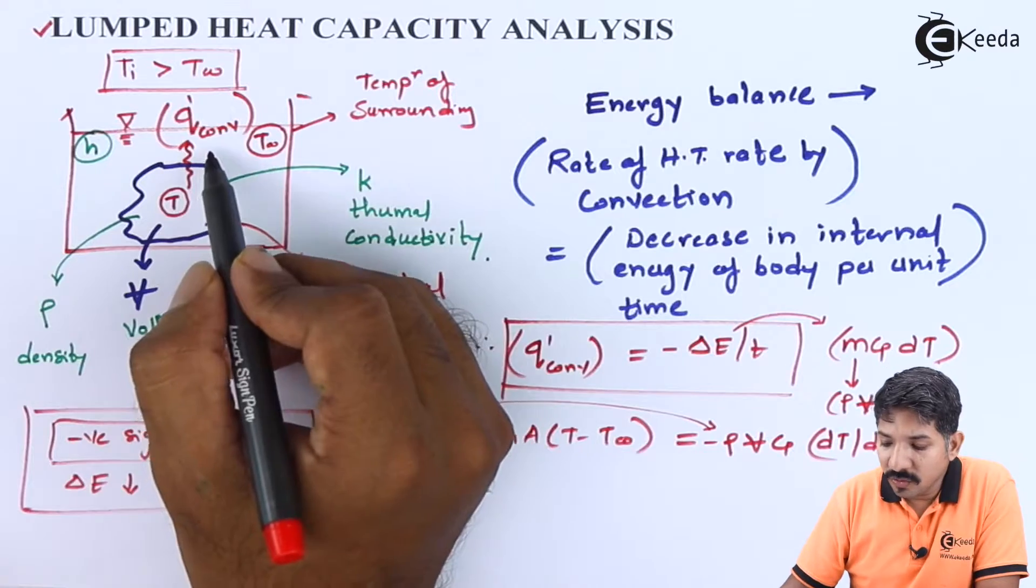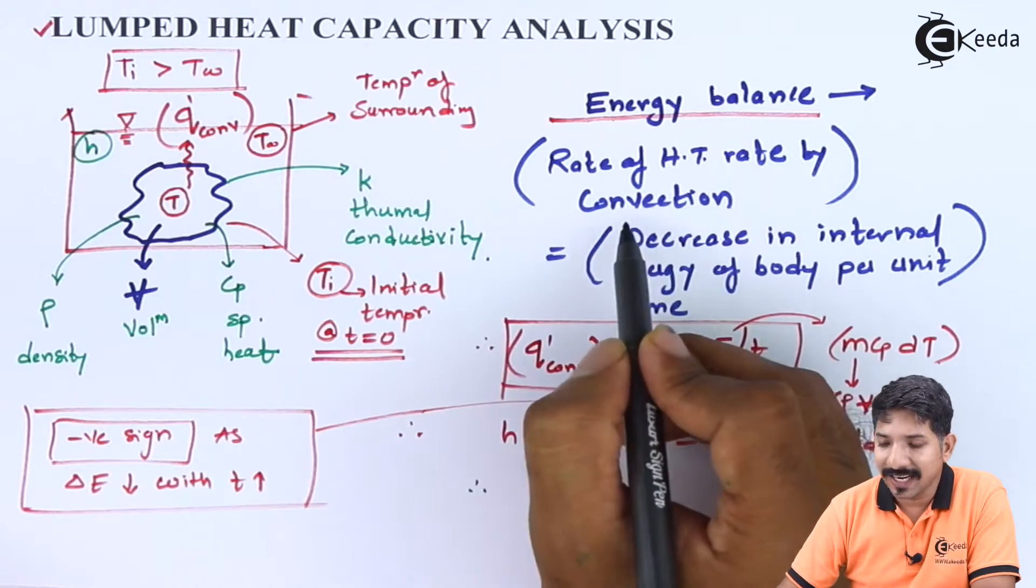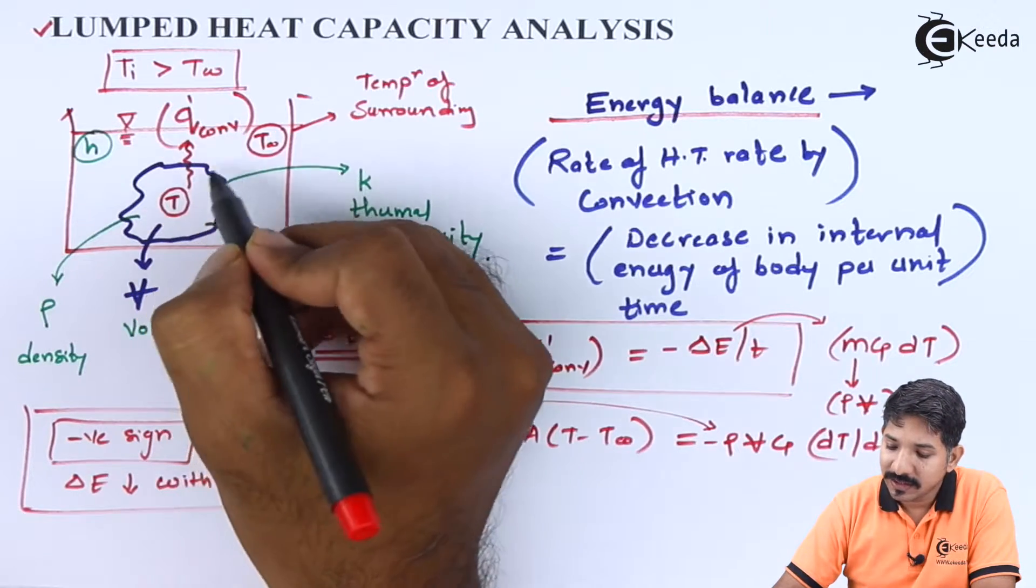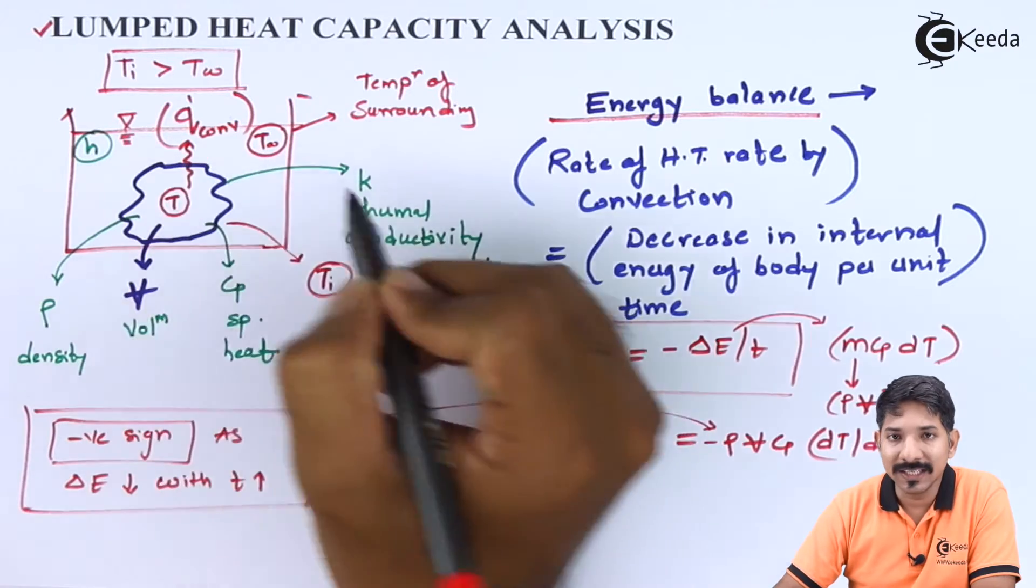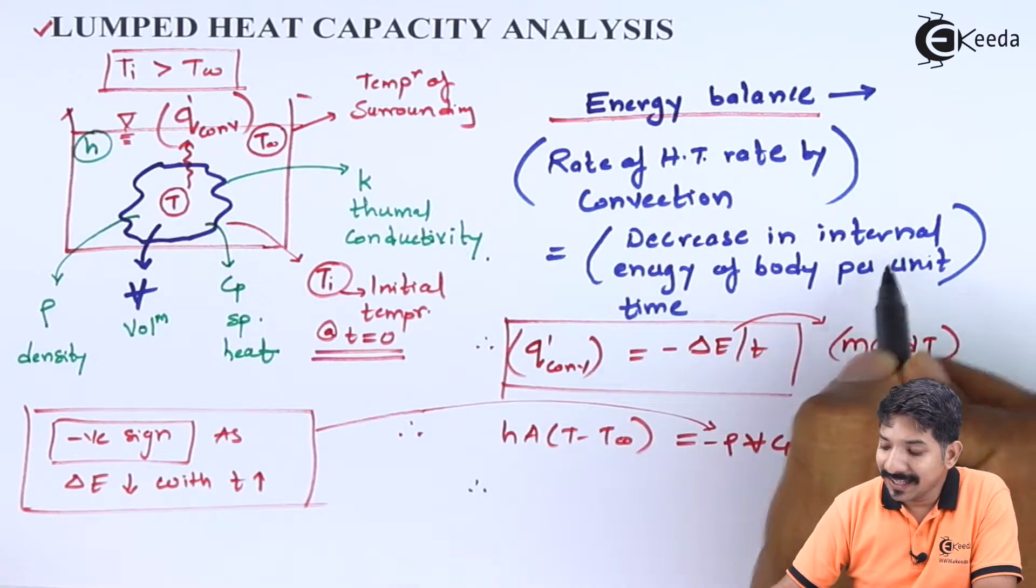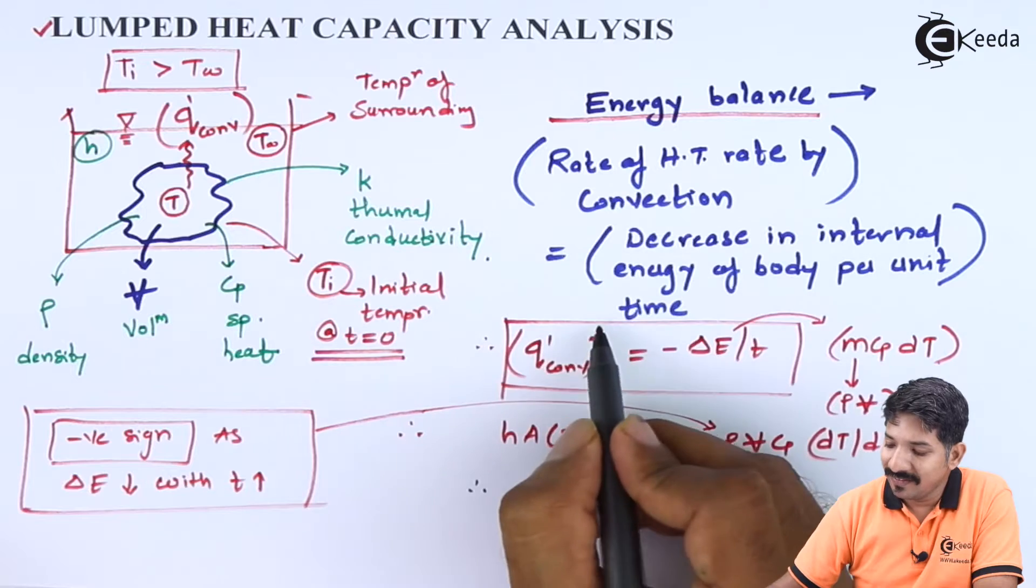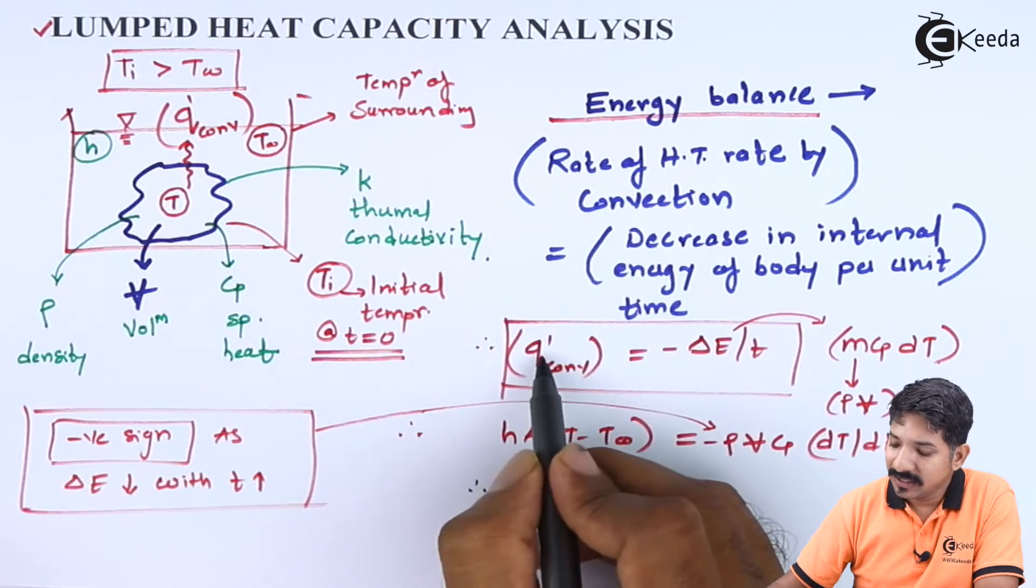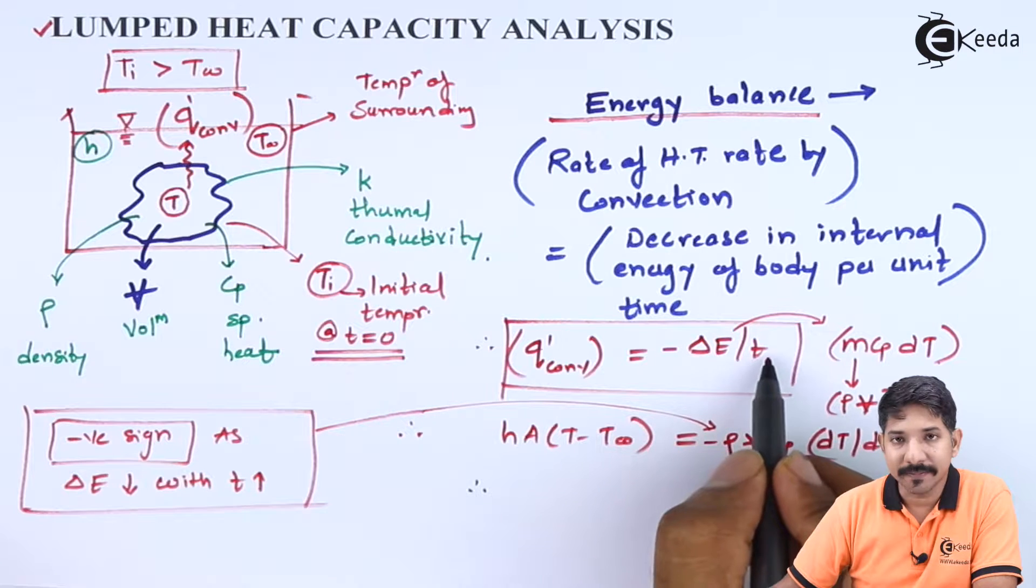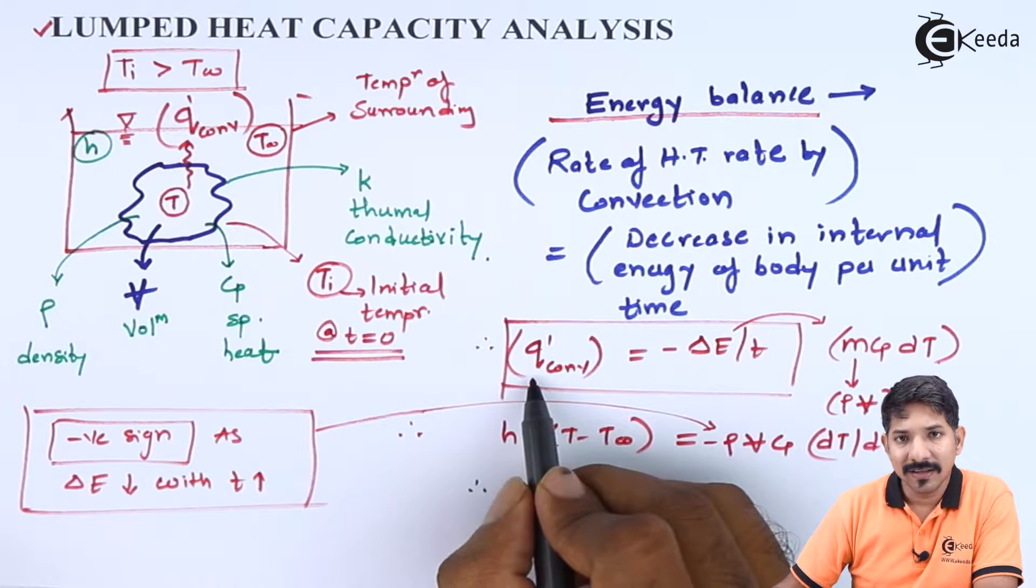Now what we are going to do, we are going to apply an energy balance equation for this. We know that the rate of heat transfer by convection, that the amount Q' of convection that is going to the surrounding is responsible to decrease the internal energy of the body per unit time. So basically, we can mathematically write this as Q' of convection equals change in internal energy per unit time. Now if you want to check the units, they are the same.